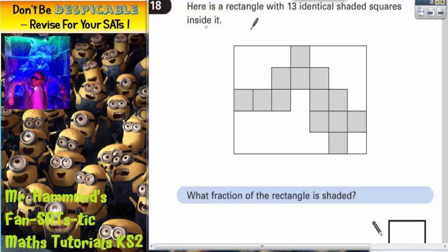Question 18. Here is a rectangle with 13 identical shaded squares inside it. What fraction of the rectangle is shaded?